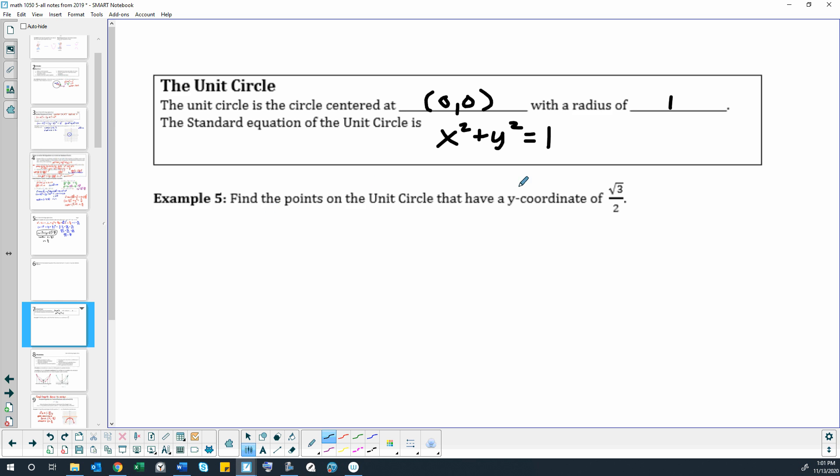Okay, find points on the unit circle that have a y coordinate of... all right, we are going to let y equals square root of 3 over 2.